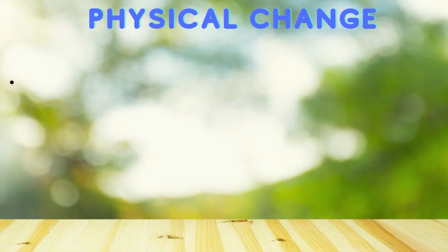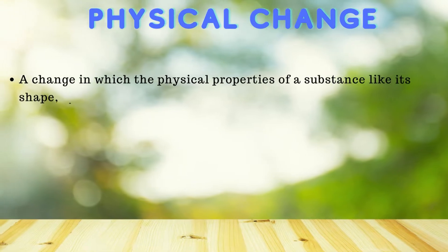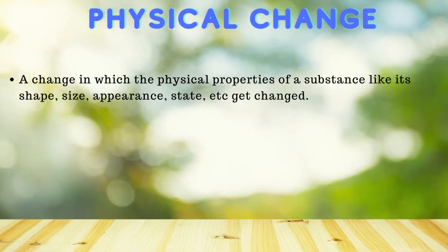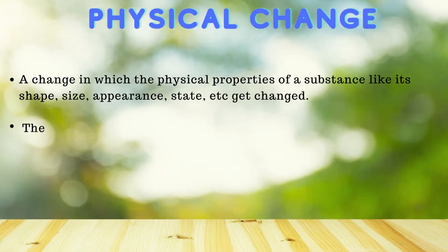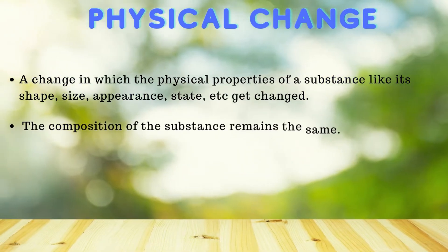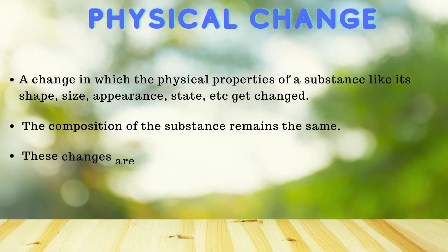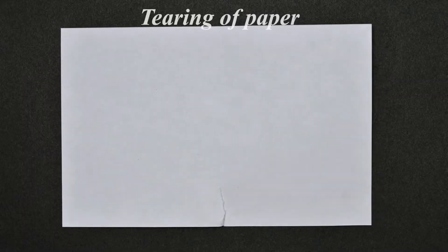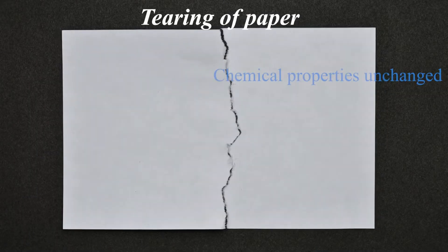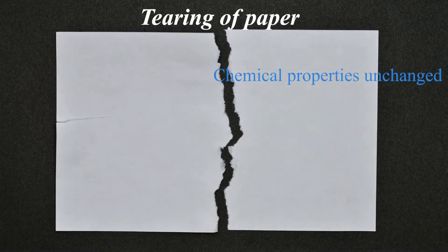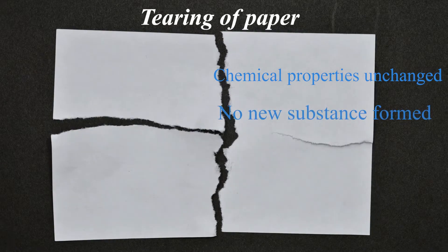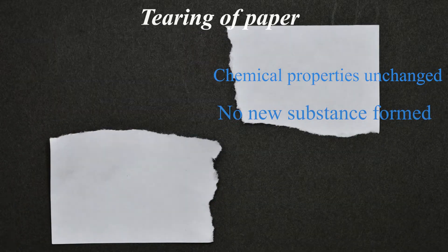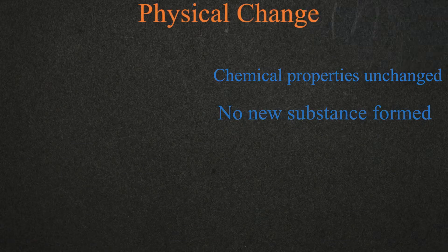Physical change. A change in which the physical properties of a substance, like its shape, size, appearance, and state get changed. The composition of the substance remains the same. These changes are usually temporary. When we tear paper, no change happens in the chemical properties of the paper — that is, the composition of the paper has not changed; only its size and looks change. Hence, it is a physical change.